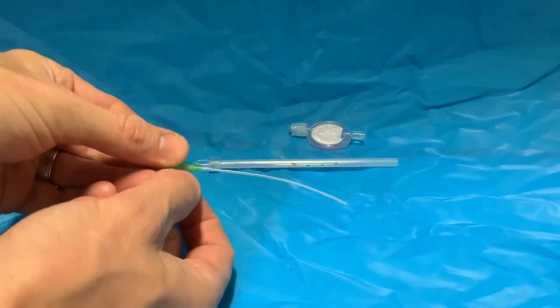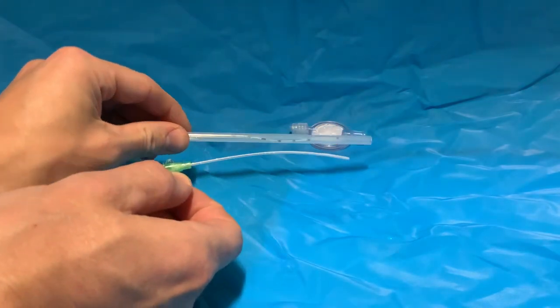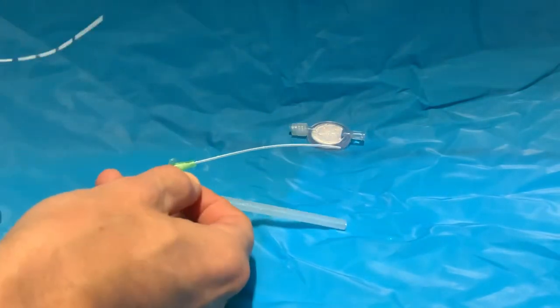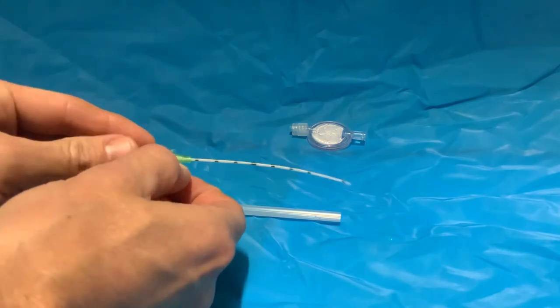At that point, you must insert the catheter through the cannula. It is exactly the same length and it will come just to the tip of the cannula.